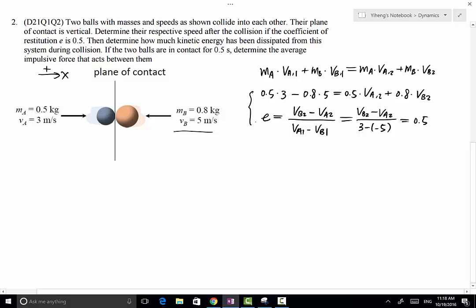Now we have two equations with two unknowns and can solve for both. As a result, VA2 equals -4.38 m/s and VB2 equals -0.385 m/s.